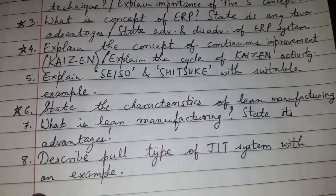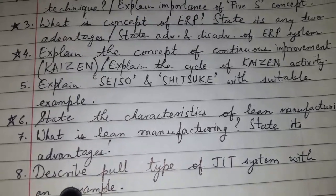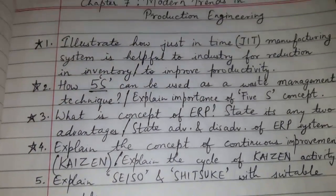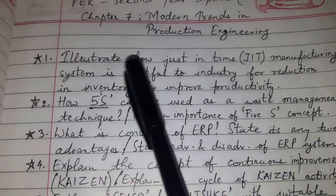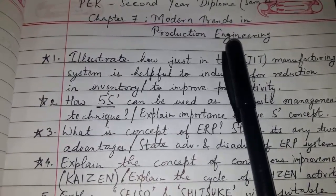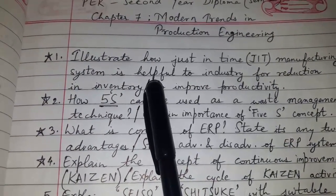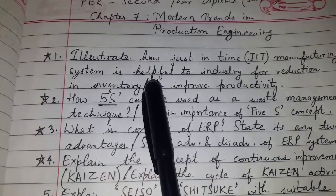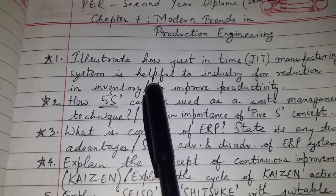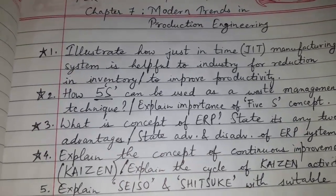Those were the questions from the question bank for chapter number seven: Modern Trends in Production Engineering. Best of luck for your examination. Please like, comment, share, and subscribe. Thanks for watching.